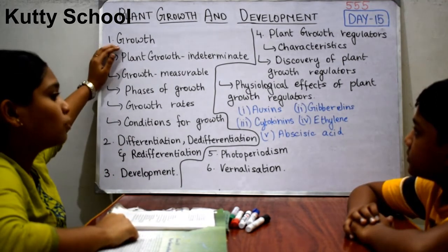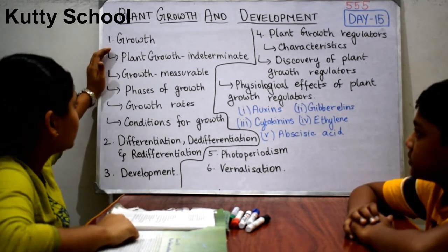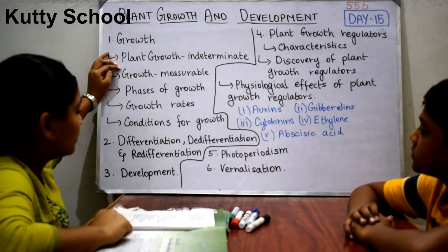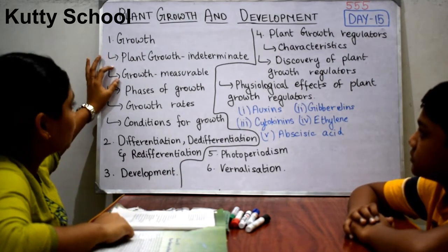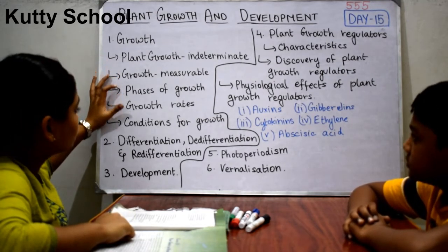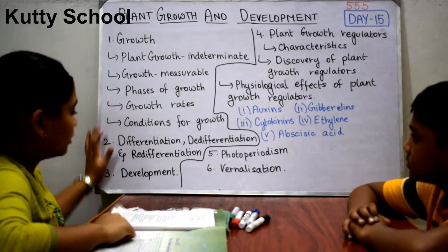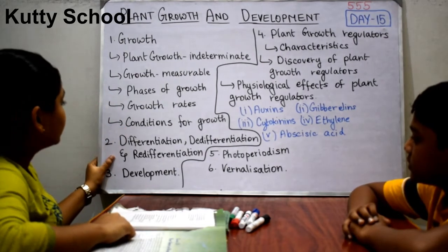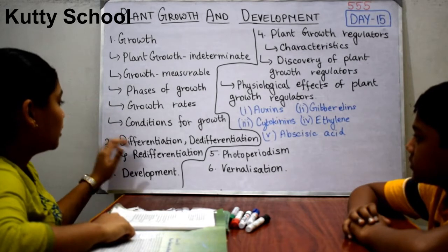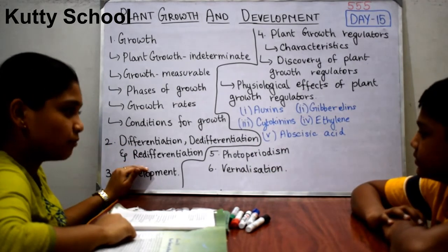The first topic is growth. In growth there are five sub-topics: plant growth in general is indeterminate, growth is measurable, phases of growth, growth rates, and conditions for growth.